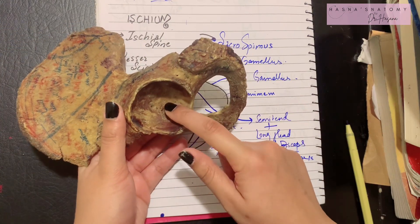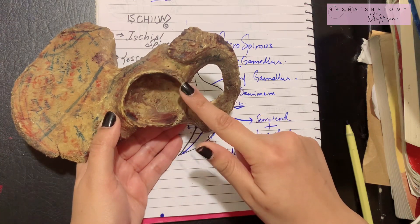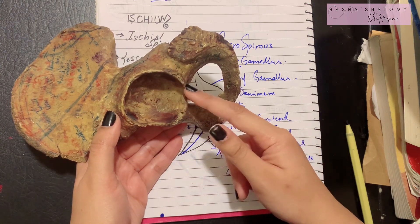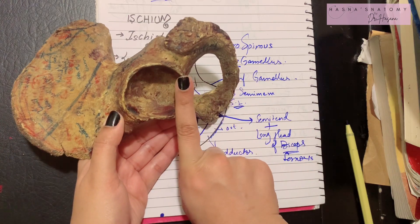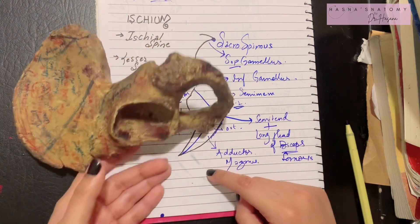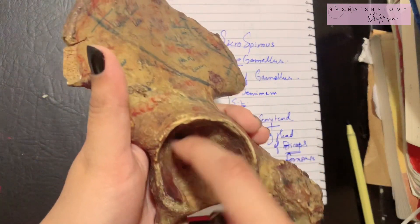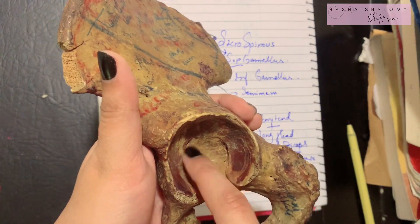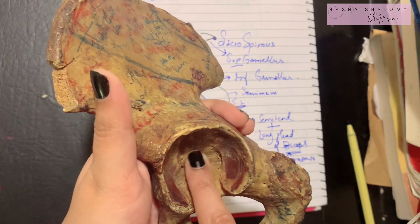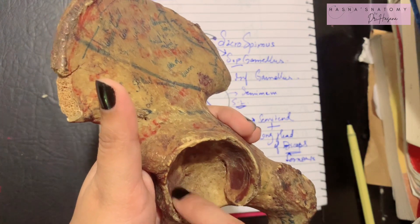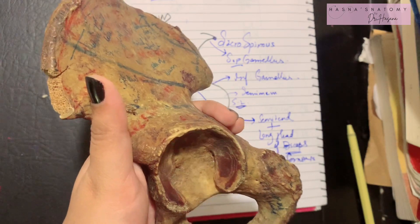The acetabulum consists of a notch all around, which is deficient inferiorly. This deficiency is bridged by a transverse ligament, through which important nerves and vessels pass. Inside the notch you can see the acetabular fossa, which is the non-articular part — the femur articulates with the outer part, not the acetabular fossa.